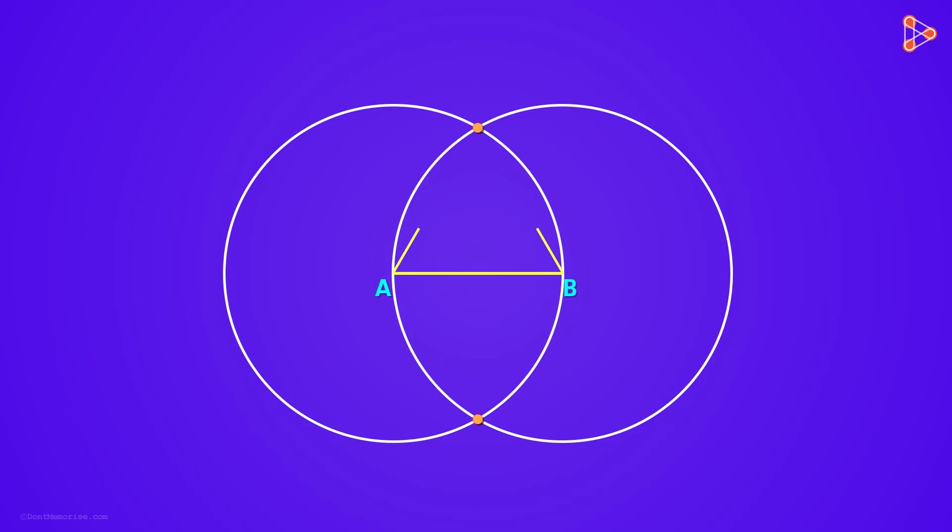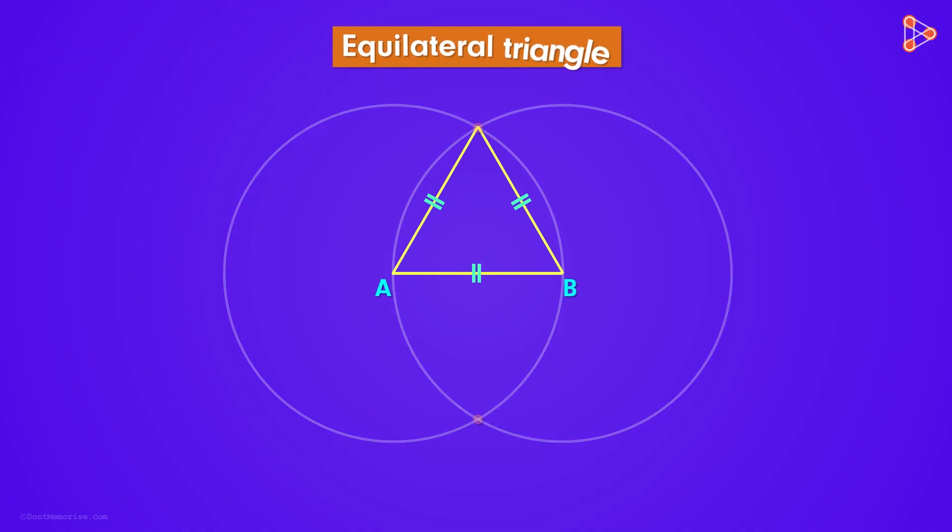So if we join points A and B to this point, we see that they are nothing but the radii of the circles. And since the radii of both the circles are equal to each other and also equal to the length of side AB, we get an equilateral triangle here.